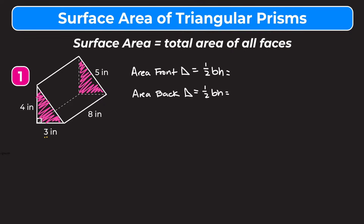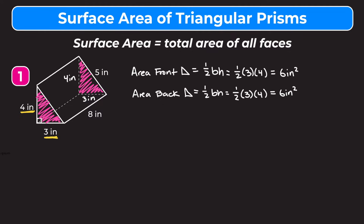In this front triangle, our base is going to be three inches and our height, which always has to be perpendicular to the base, is four inches. So the area is one-half times three times four. Three times four is twelve, and half of that is six — so six inches squared. For the back triangle, the base is three inches and the height is also four inches, so those two triangles are congruent. Again, one-half times three times four equals six inches squared.